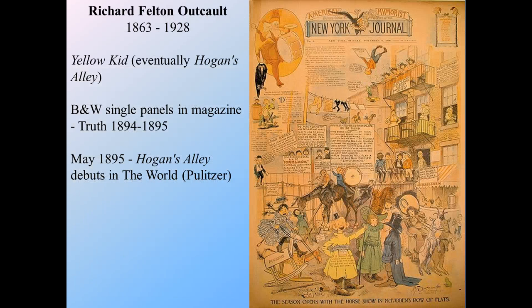At the end of the 1800s, The Yellow Kid by Richard Felton Outcault really changes — or really gives us — comics. As you can see, there were people everywhere saying things, lots of print and action. Originally these were black-and-white single panels in the magazine Truth from 1894 to 1895. But in May 1895, The World, run by Joseph Pulitzer, had Outcault publish Hogan's Alley, essentially the same strip, and it became extremely popular very quickly. Publishers began fighting one another to hold on to comic artists, because they really did sell newspapers in the late 1800s and early 1900s.